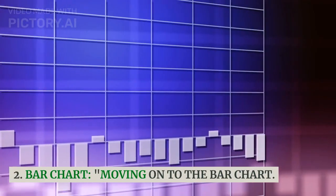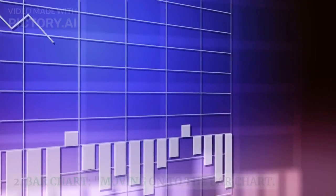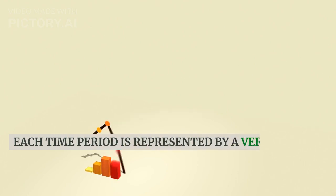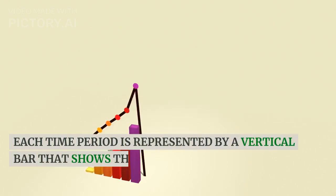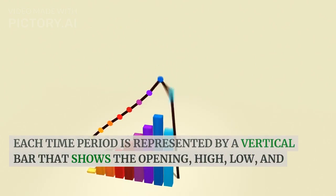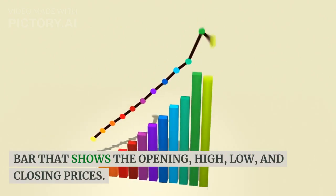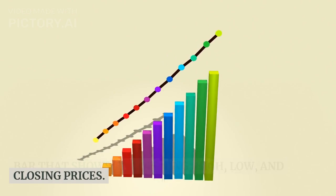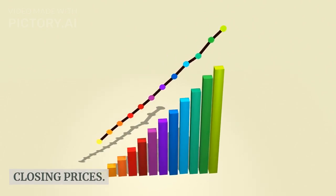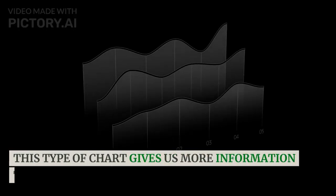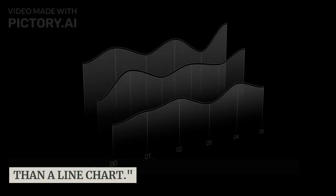Moving on to the bar chart. Each time period is represented by a vertical bar that shows the opening, high, low, and closing prices. This type of chart gives us more information than a line chart.